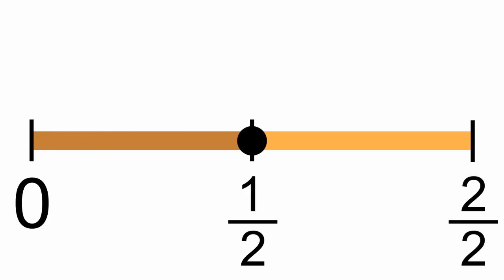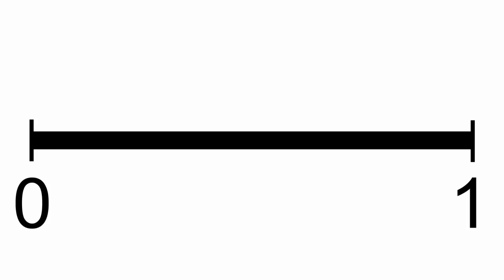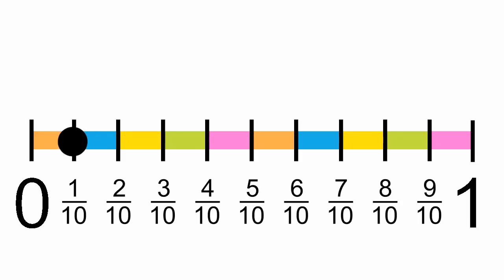How about a harder one? Let's draw 7 tenths. Here's our number line again. If we divide it into ten even pieces, it looks like this. Let's label each tenth. And here's the location of 7 tenths, right here.